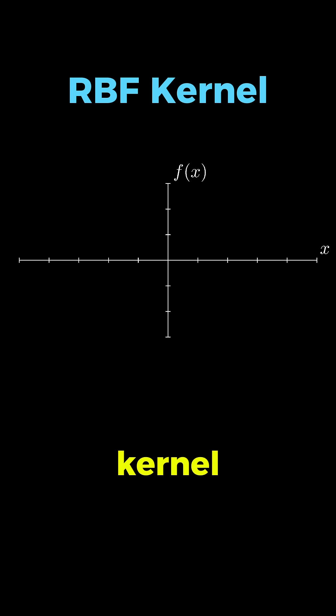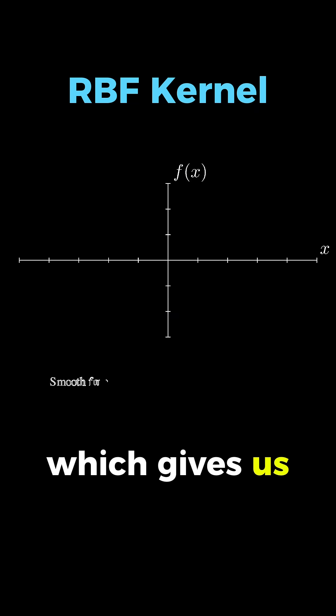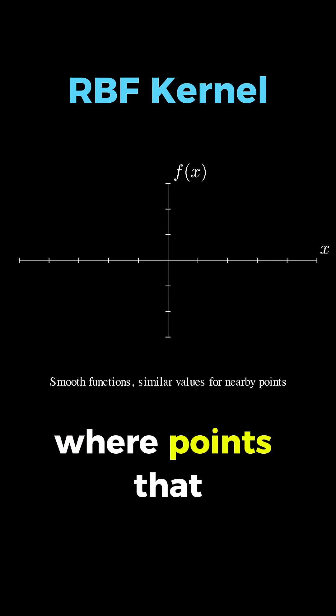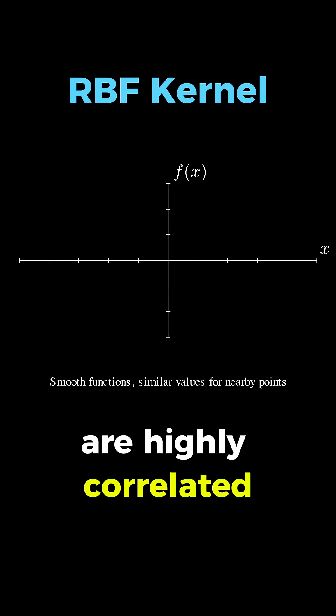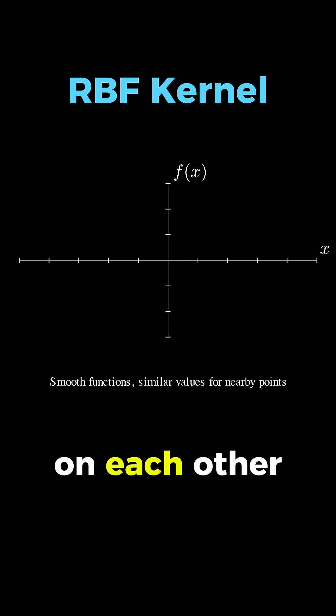First, let's look at the RBF kernel, also called the squared exponential kernel, which gives us beautiful smooth functions that vary gradually with sharp changes, where points that are close together are highly correlated, while points that are far apart have almost no influence on each other. The formula is k of x and x'